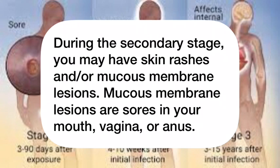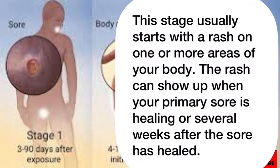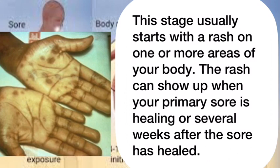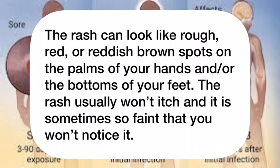During the secondary stage, you may have skin rashes and/or mucous membrane lesions. Mucous membrane lesions are sores in your mouth, vagina, or anus. This stage usually starts with a rash on one or more areas of your body. The rash can show up when your primary sore is healing or several weeks after the sore has healed. The rash can look like rough red or reddish-brown spots on the palms of your hands and/or the bottoms of your feet.